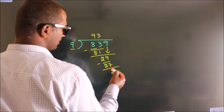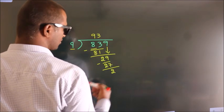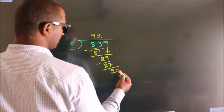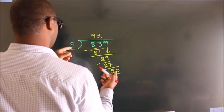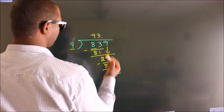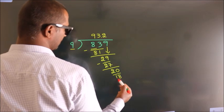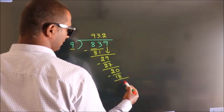After this, no more numbers to bring it down. So what we do is, we put a dot, take 0. So 20. A number close to 20 in the 9 table is 9 2's, 18. Now we subtract, we get 2.